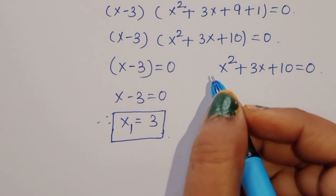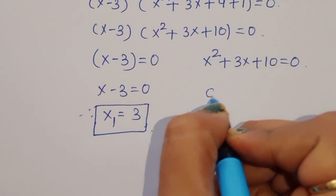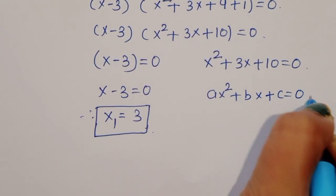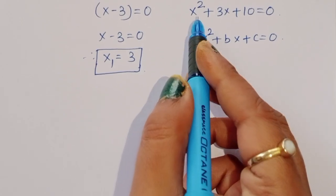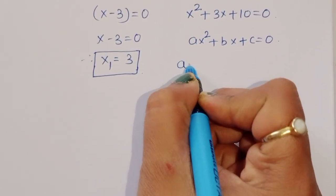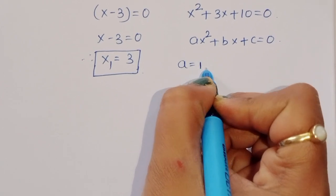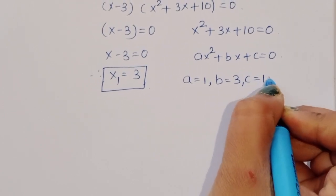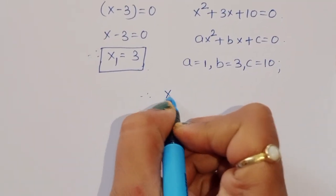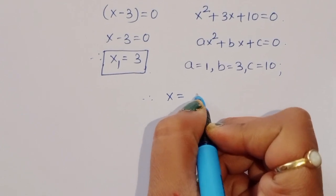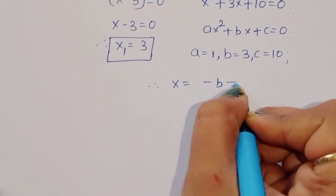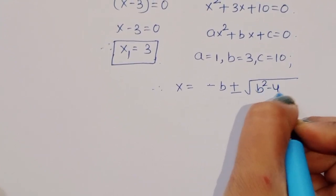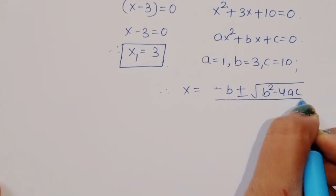For the next term, we use the quadratic formula. We know: ax² + bx + c = 0. Comparing with x² + 3x + 10 = 0, we get a = 1, b = 3, c = 10. Therefore x = (−b ± √(b² − 4ac)) / 2a.